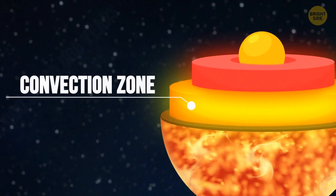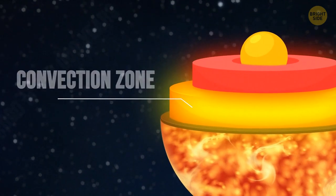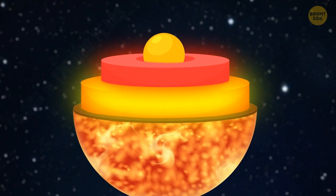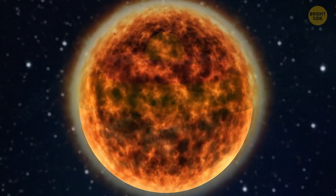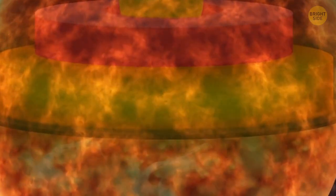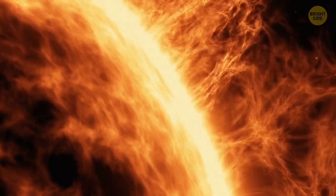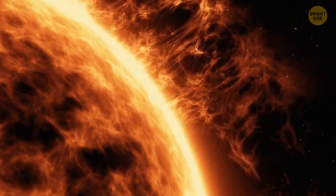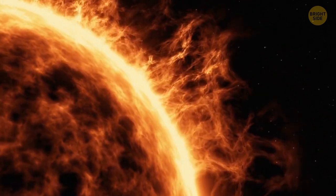Then there's the convection zone. This is what's considered to be the surface of the sun. But it's not a solid surface. It's an ocean of hot plasma. It looks like a bee honeycomb. That's because the heated plasma rises from the lower layers, creating something like mini geysers. And while it's still hot in the middle of those geysers, their edges cool down, creating an amazing pattern on the sun's surface.